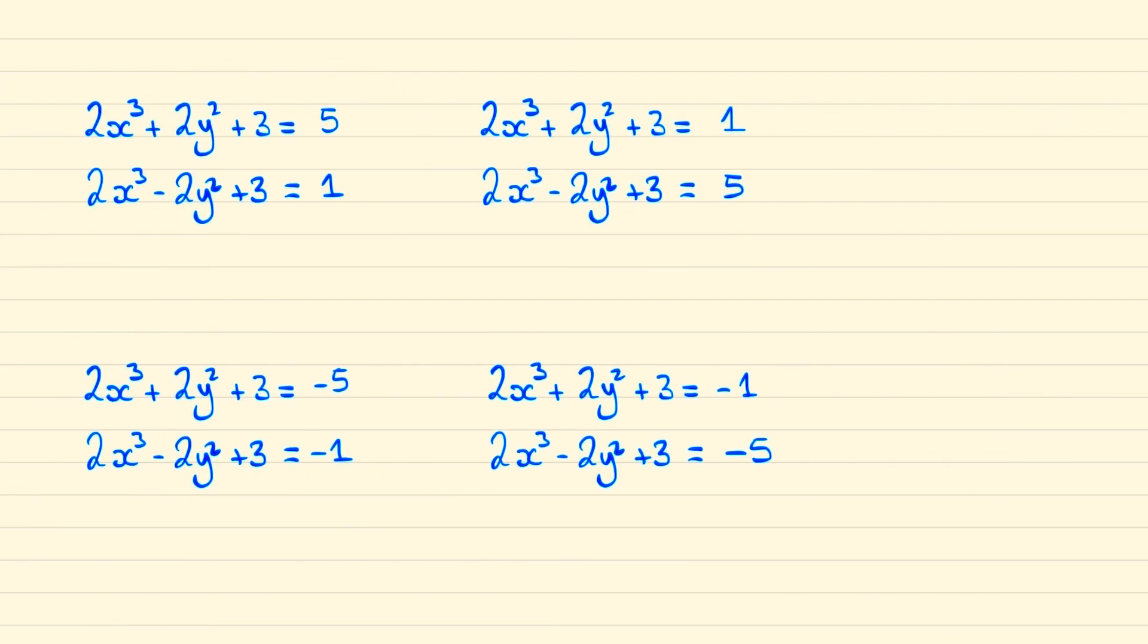We can denote all four possible systems, and solving these simultaneously we find that no integer solutions exist in three cases. In the fourth case, we find that x = 0 and y = ±1. So the integer solutions to this equation are (x, y) = (0, ±1).